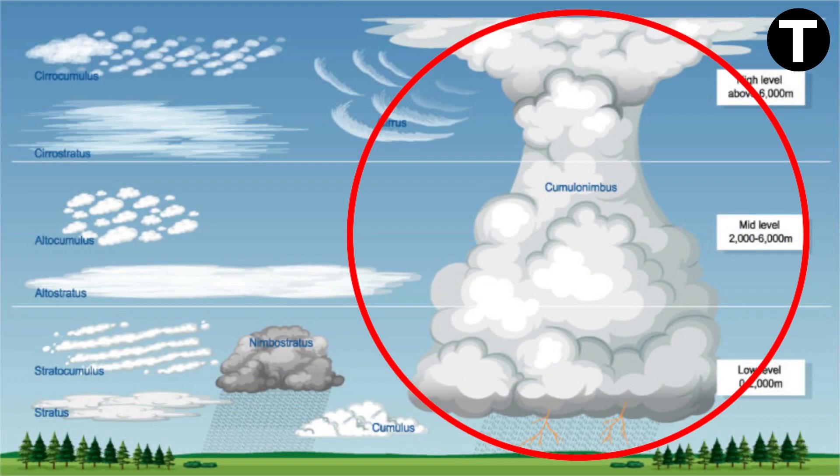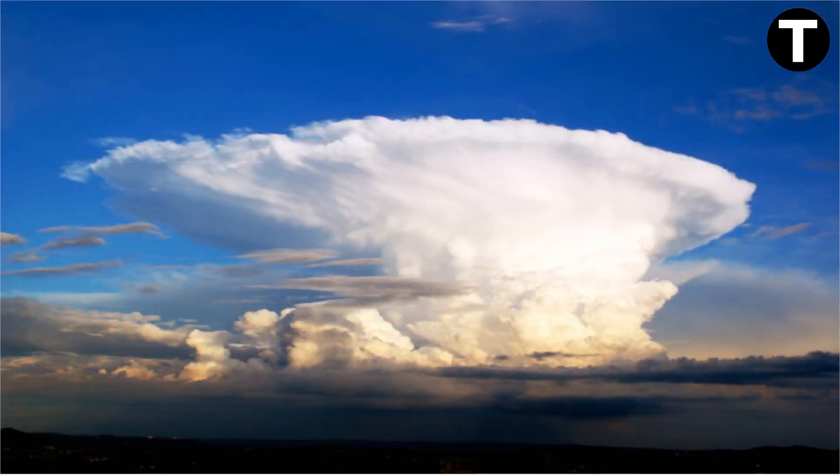Enter the mighty cumulonimbus clouds — dense, towering, and the source of thunderstorms. They sport an anvil-shaped top and can herald a cold front's approach.